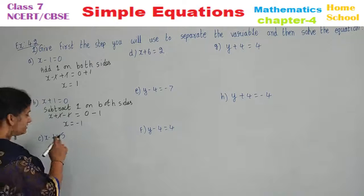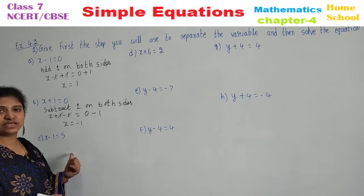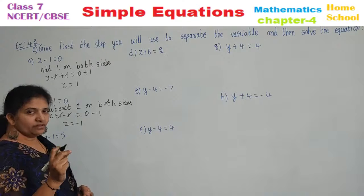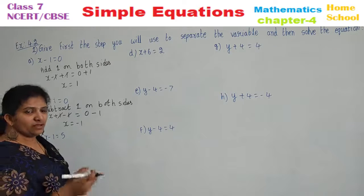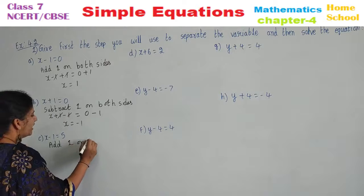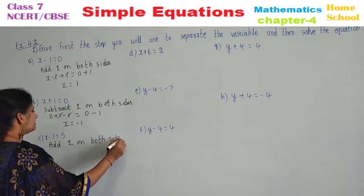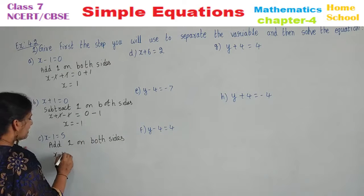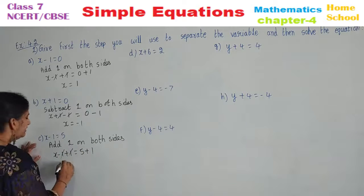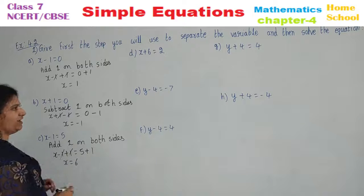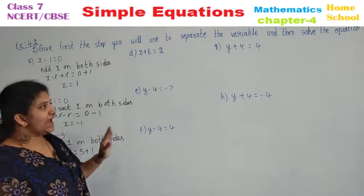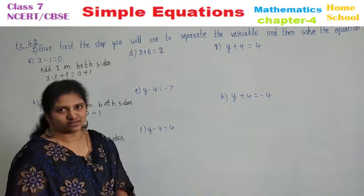Are you able to follow, children? See the third one: x minus 1 equals 5. Other than the variable, you have minus 1; its opposite is plus 1, so add 1 on both sides. x minus 1 plus 1 equals 5 plus 1; minus 1 plus 1 cancels, so x equals 6. If you can follow these three problems, pause the video and try to solve the remaining problems, then play and check your answers.